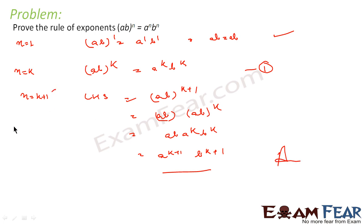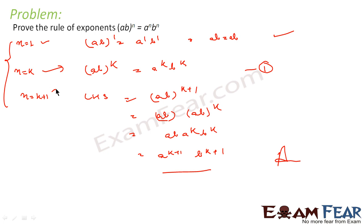So the statement is true for all values of n. We proved it is true for n equal to 1, assumed it is true for n equal to k, and proved it is true for n equal to k plus 1. Therefore the statement is true for all values of n.